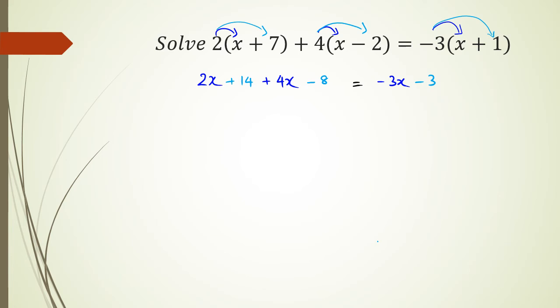So I'm going to simplify the left hand side first so things are a bit easier. So I'm going to collect my like terms which is 2x and 4x, that's 6x, and then 14 minus 8 is positive 6. And this is equal to -3x - 3.